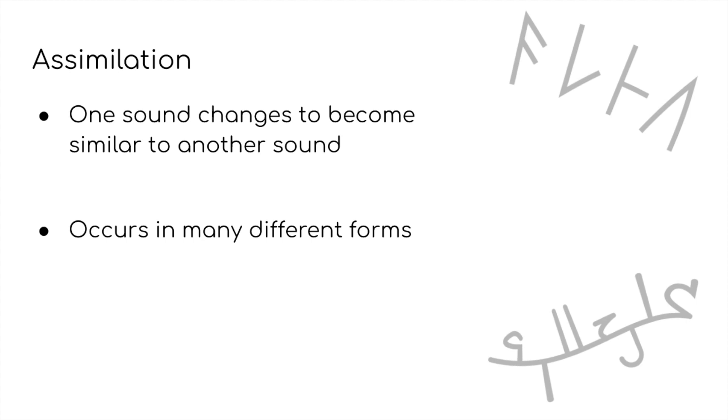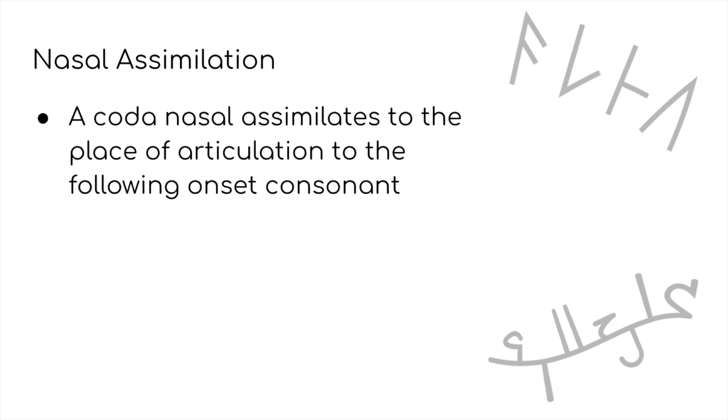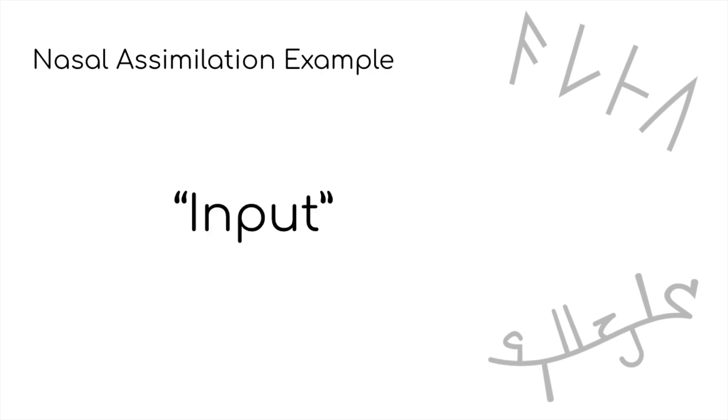A very common example of assimilation is what we'll call nasal assimilation. In this process, a nasal coda assimilates to the same place of articulation as the onset of the following syllable. To illustrate this, let's look at the English word input. Although the general form of the prefix in ends in an alveolar nasal, when we use it in input, that coda n assimilates and becomes a bilabial nasal, matching the place of articulation of the p.